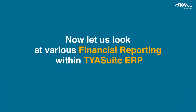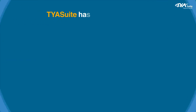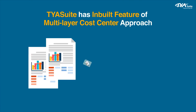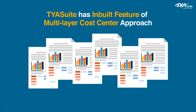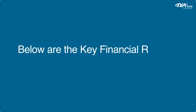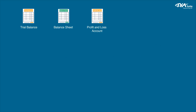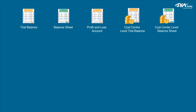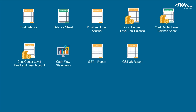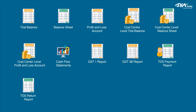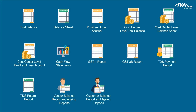Now let us look at various financial reporting within TYASuit ERP. TYASuit has an inbuilt multi-layer cost center approach. Depending on your business complexity, you can define up to six layers of cost center within TYASuit ERP. You will be able to download all financial reports at any cost center level or group of cost centers as per your requirement. Key financial reports include: trial balance; balance sheet; profit and loss account; cost center level trial balance; cost center level profit and loss account; cash flow statements; GST1 report; GST3B report; TDS payment report; TDS return report; vendor balance report and aging reports; customer balance report and aging reports; all kinds of customized reports; and project level profitability.